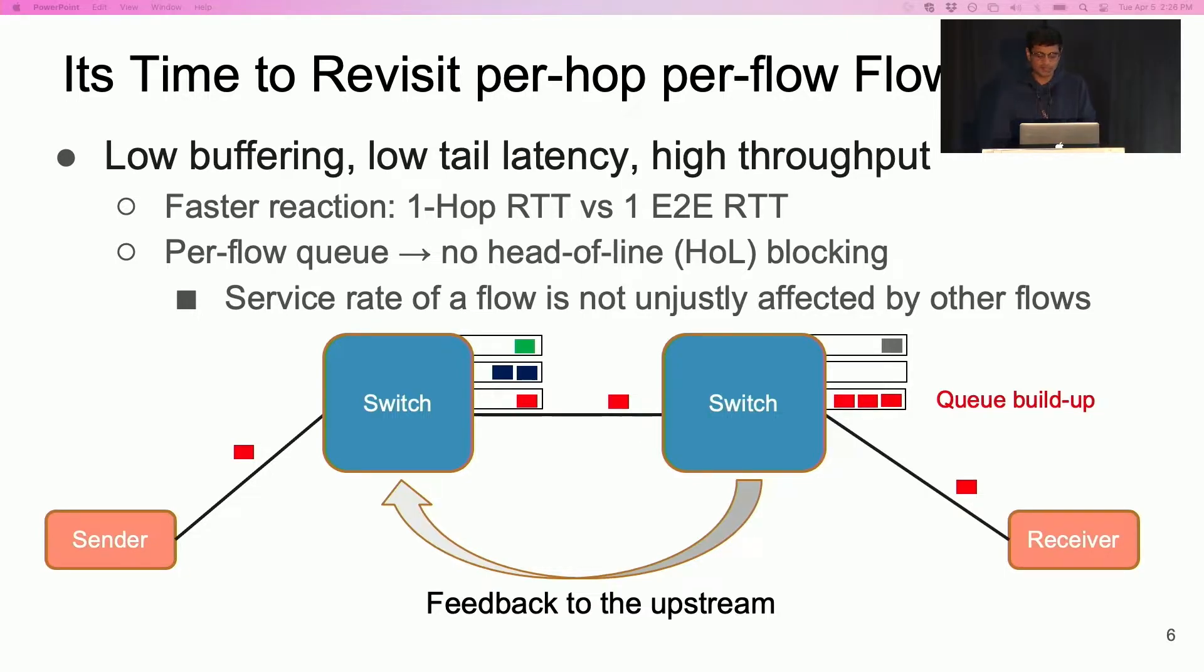Moreover, with per flow queues, the upstream switch can throttle the flow causing congestion independently and without affecting the service rate of other flows. In contrast to deployed schemes, with per hop per flow control, there is simply no head-of-line blocking. No head-of-line blocking implies that the long flows in the network can act aggressively to keep the network busy without worrying about hurting latency of competing short flows. Per hop per flow control thus provides both low tail latency for short flows and high throughput for long flows.